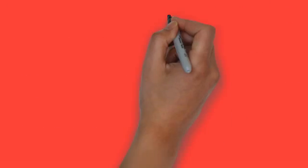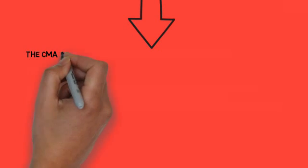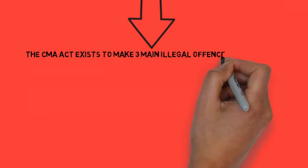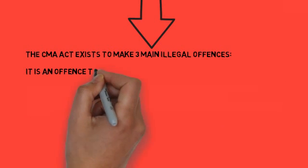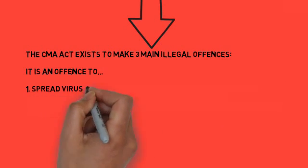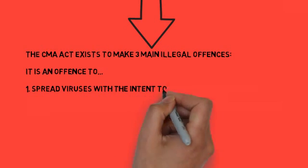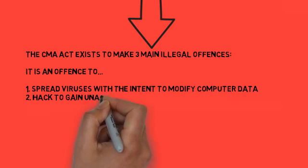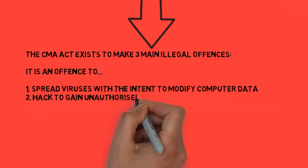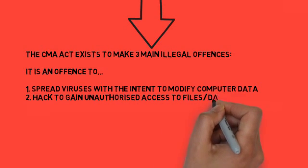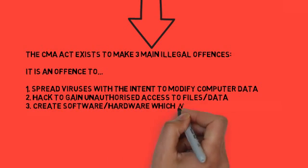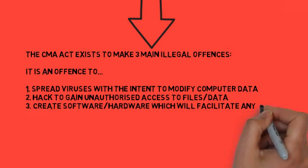The Computer Misuse Act — why does it exist? It makes it illegal in the UK to do three things. The three main offences are: one, to spread viruses with the intent of modifying, changing, or deleting computer data; two, to hack to gain unauthorised access to files or data; and three, to create software or hardware which will allow people to spread viruses or hack data.